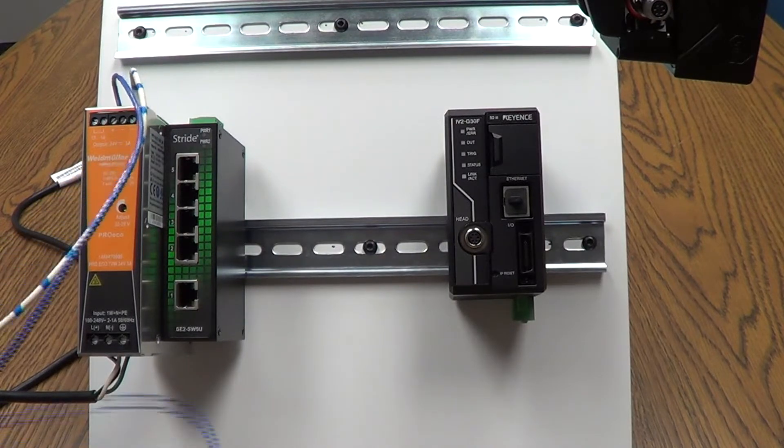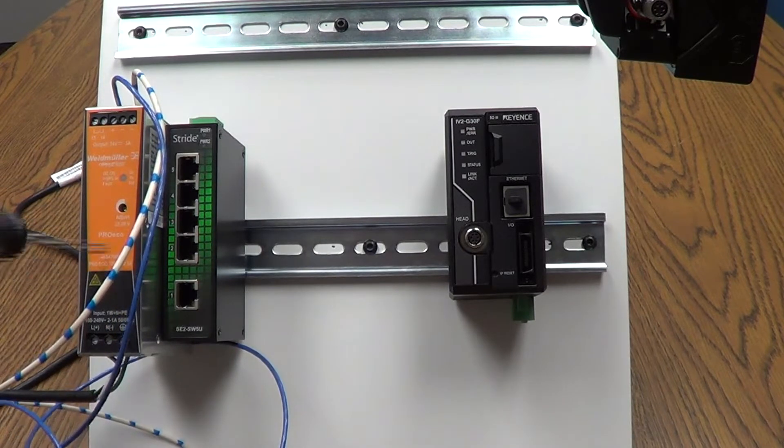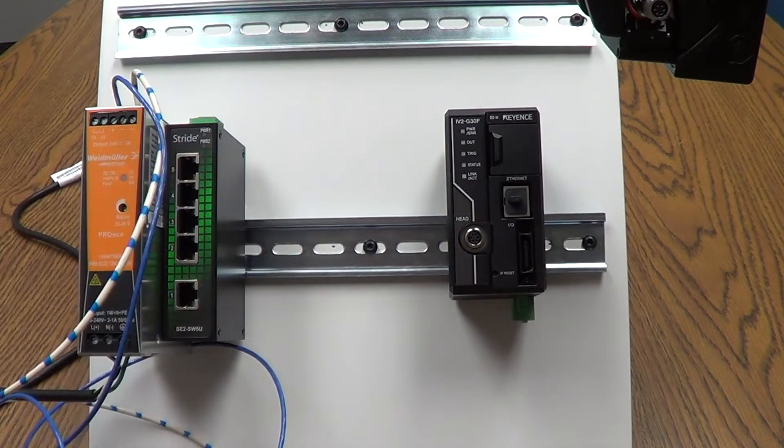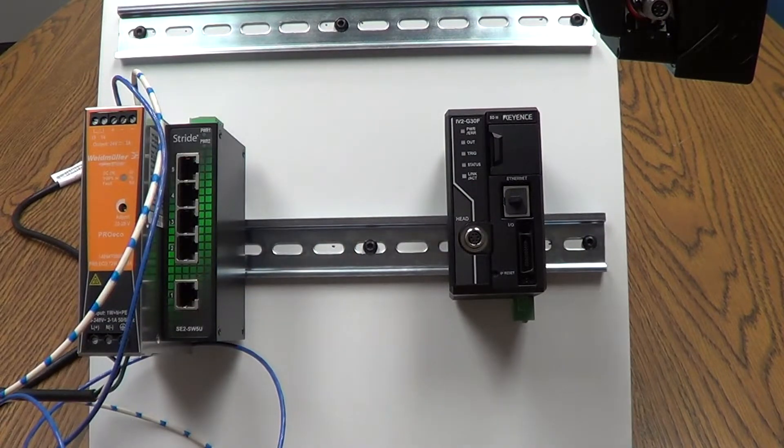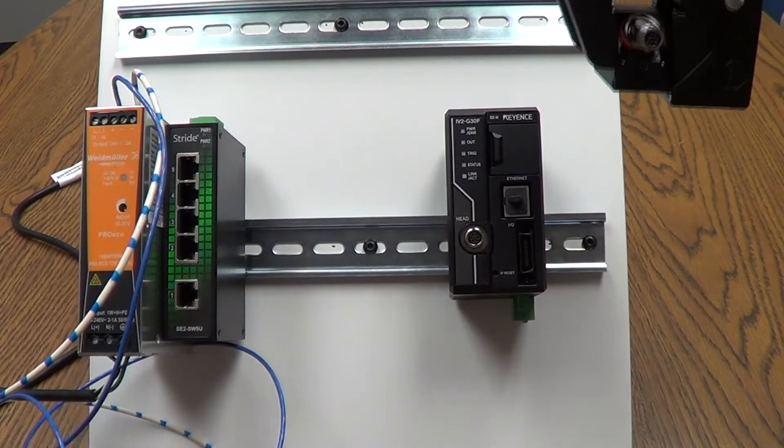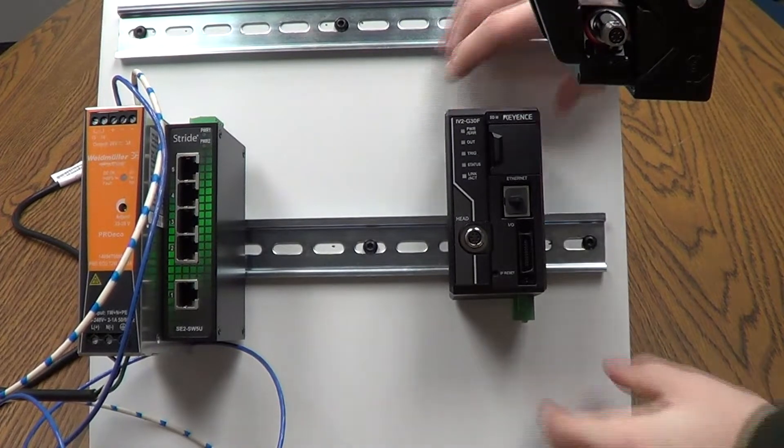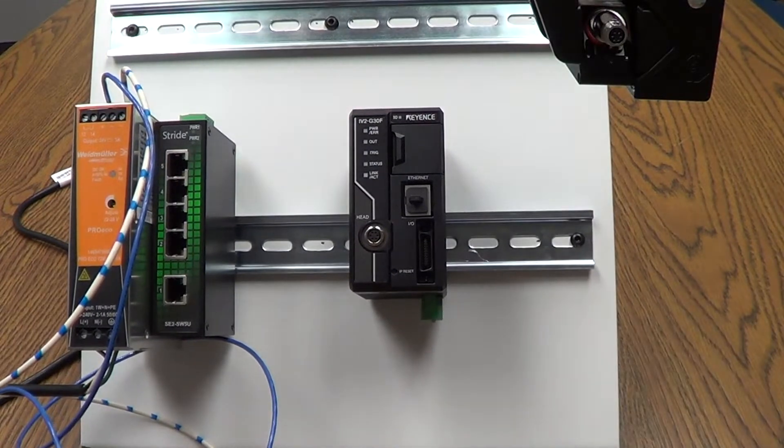So in this video we have a power supply right here and this is a Wiedmüller power supply as well as a Stride 5 port ethernet switch and then obviously our Keyence controller right over here. And then up here in the corner I'll try to adjust that slightly so that we can see just a little better is the actual vision sensor itself. Now that's not the position that we would need to have that vision sensor in but for the sake of this demonstration we're going to go ahead and have that put there.